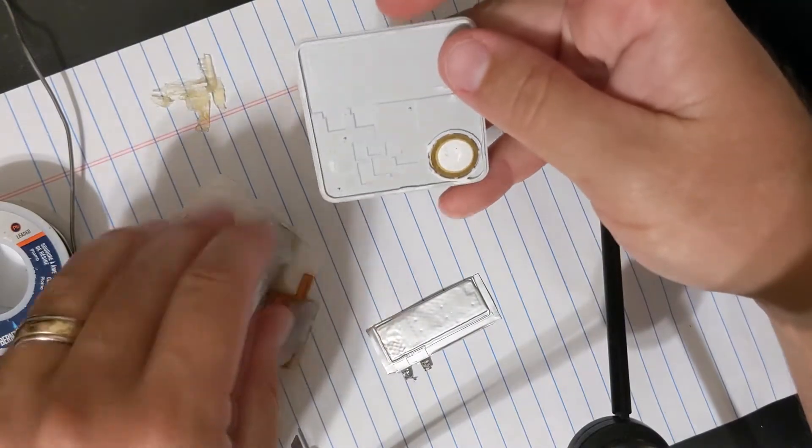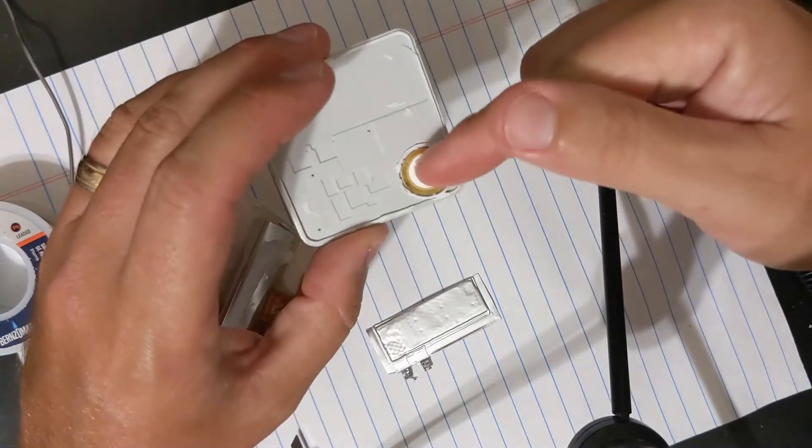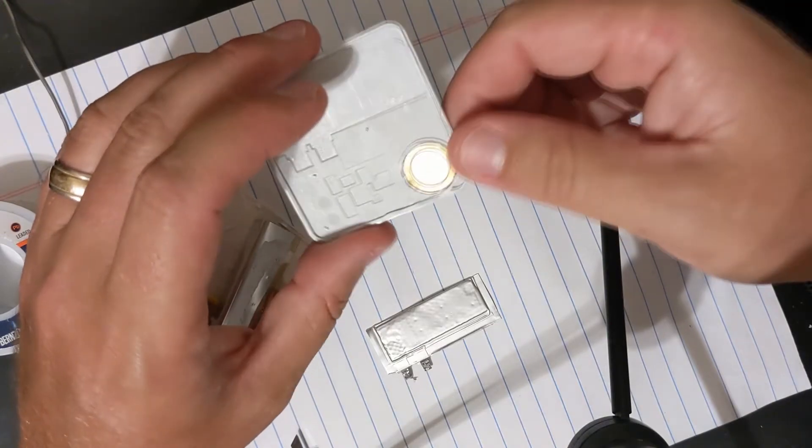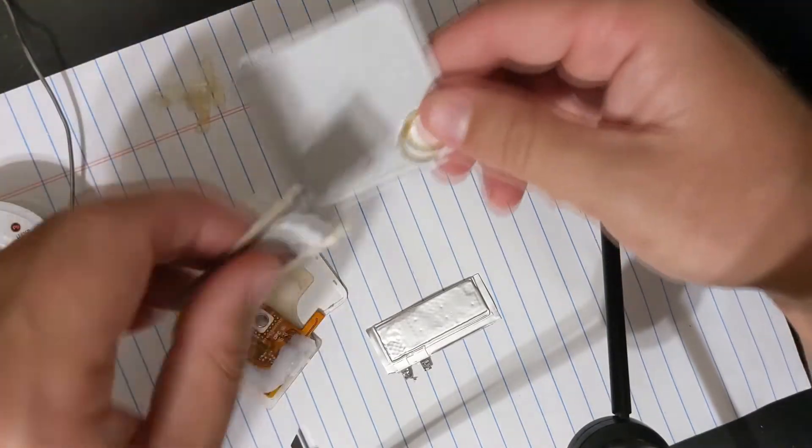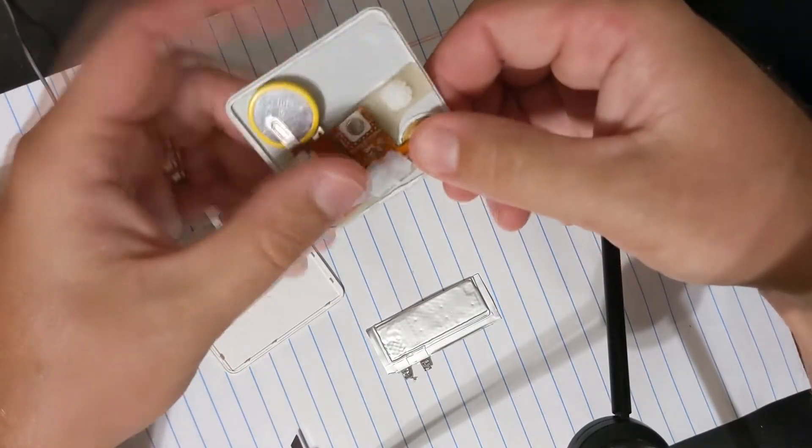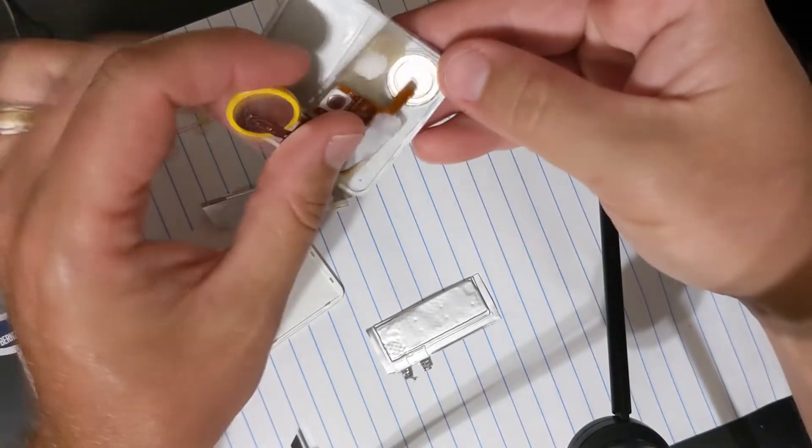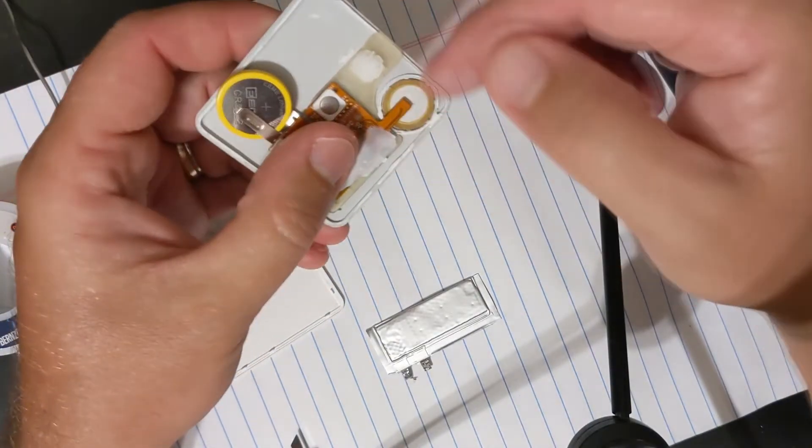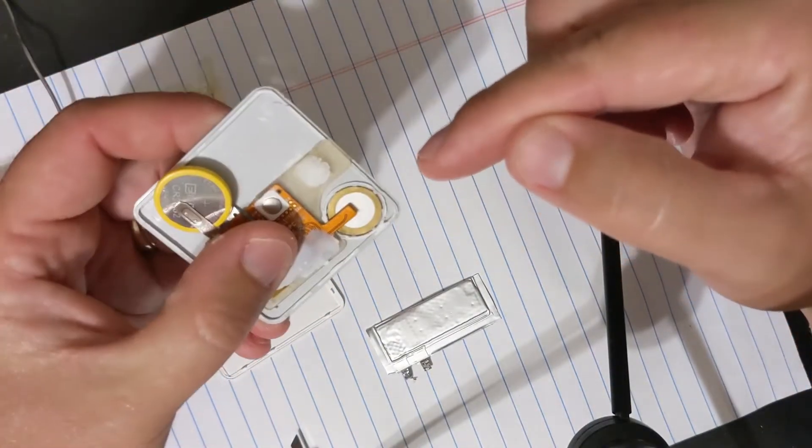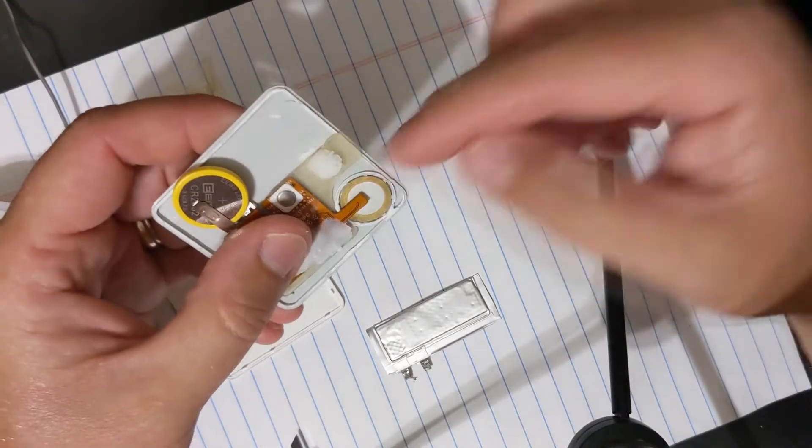This little thing, when I first took it apart, I wasn't really sure what the battery was. I was like, whoa, is this the battery? So I put the multimeter on that. No, it's not the battery. That's the thing that makes noise. This little contact right here somehow reverberates off that and makes the little chime. Pretty cool. That's basically the speaker.